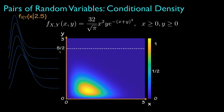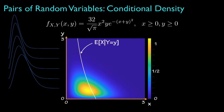For each of these conditional densities, we can multiply by x and integrate to evaluate a conditional expectation, which for each value of y would look like this. As an example, if y is equal to 1.5, then the conditional expectation for x would be approximately 0.65. Going through a similar analysis — that is, evaluating the conditional density for y conditional on x — we could find the conditional expectation for y as a function of the values that x takes, and that would look something like this.